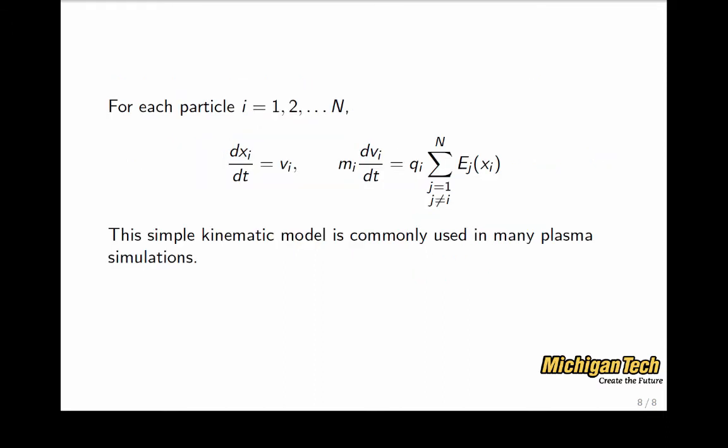So, finally, we have the electrostatic kinematic model, which is for every particle i equals 1 to n, we solve the equations of motion. The rate of change to position is vi, and then this force is proportional to qi times the electric field contribution from every other particle in the system.